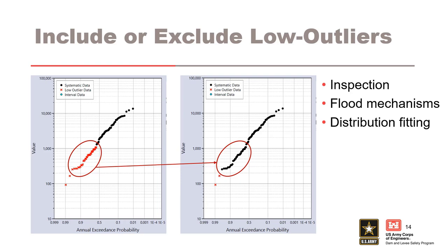A weight of evidence approach should be used. You should confirm that the data points identified as outliers are data points that should be removed from the systematic record. You want to use as much of the data that is available and only exclude data if the weight of the evidence concludes it should be removed. Some evidence that could help resolve the question is to determine if they come from a separate hydrologic process. Is the data regulated with some stepping behavior? Is there a known flood mechanism that is causing the heterogeneity? If supporting evidence cannot be found, there is potential to reject the outlier test results.